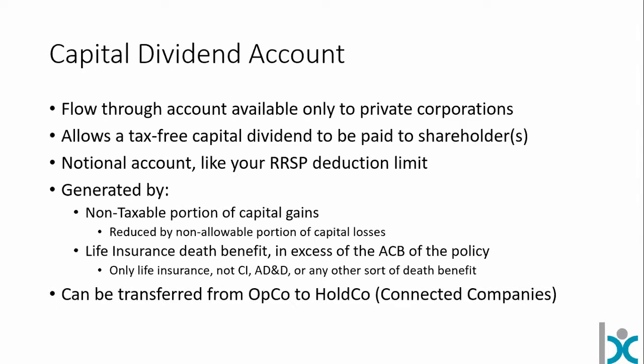The CDA is generated by the non-taxable portion of capital gains, but it's reduced by the non-allowable portion of capital losses. Capital gains and losses within the corporation create or reduce the capital dividend account credit. A life insurance death benefit is really the other core way to generate a CDA credit. There are other rules, but they all basically come down to these two things.